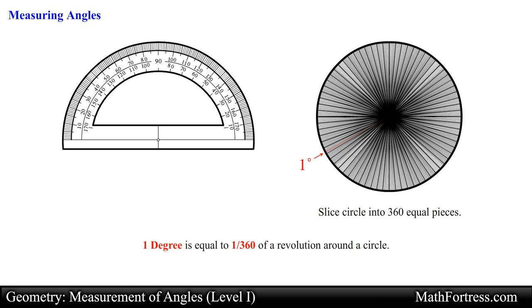So a protractor is nothing more than half a circle broken up into 180 equal slices.